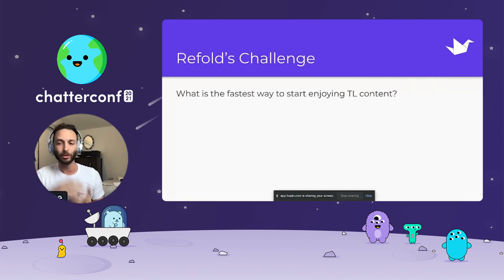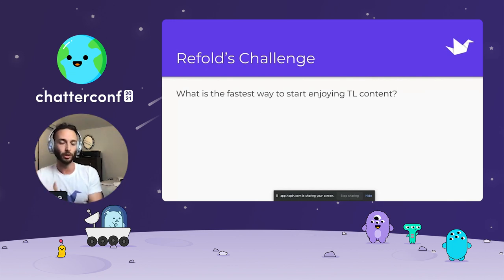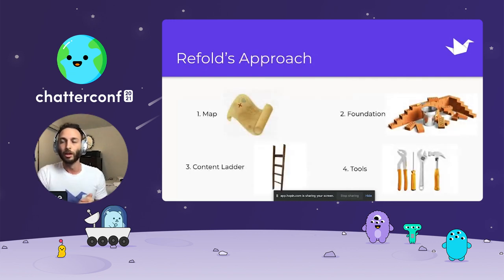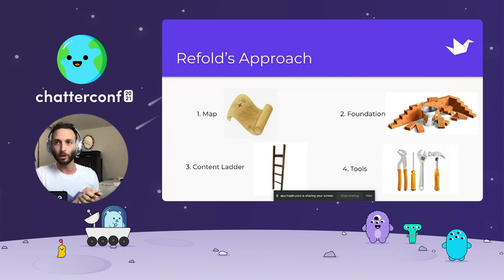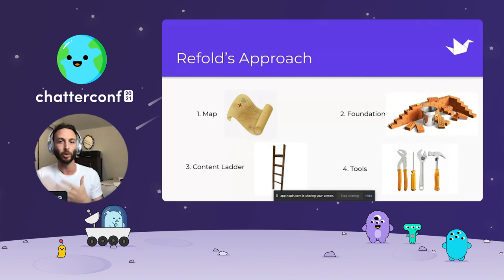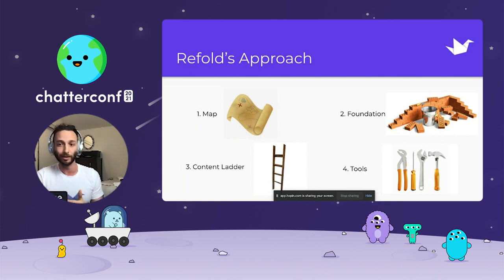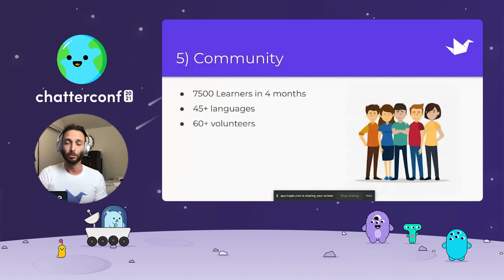So the question is: how do you get somebody to the point where they can actually enjoy their immersion content? That's what we're focused on. If you can get somebody to the point where they enjoy their immersion, they will continue to do it of their own accord. We have five components: first, we provide a map showing exactly how language acquisition happens. Second, we give them a foundation — the vocabulary and grammar specifically necessary to start enjoying their immersion content. Third, we're collecting content from all over the web and organizing it by difficulty to create content ladders. Fourth, we collect tools from the web that help people learn directly from immersion. And fifth — the most important — is our community.